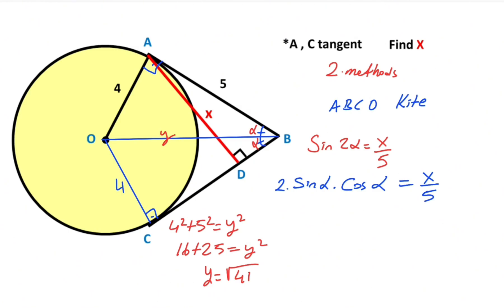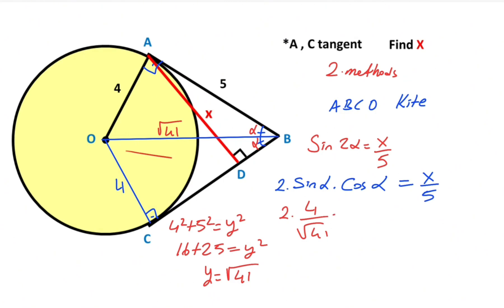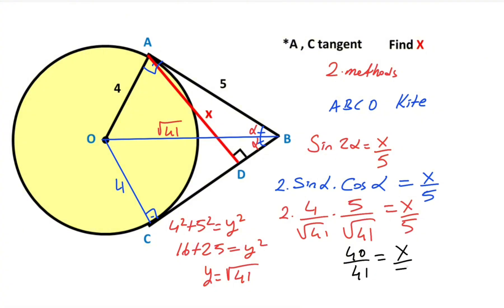So y equals root 41. Now we can calculate: sine alpha equals 4 over root 41, and cosine alpha equals 5 over root 41. Therefore, 2 times (4 over root 41) times (5 over root 41) equals x over 5. This gives 40 over 41 equals x over 5, so x equals 200 over 41.